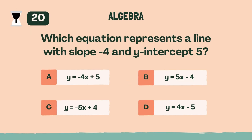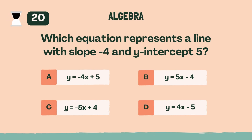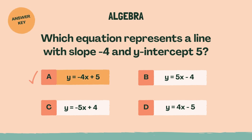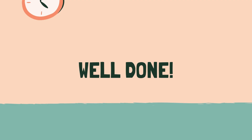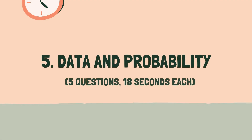Which equation represents a line with slope negative 4 and y-intercept 5? A, y equals negative 4x plus 5. Well done. Let's move on to the next category.